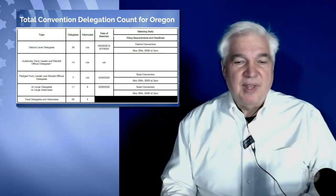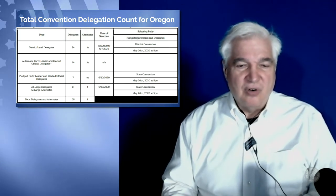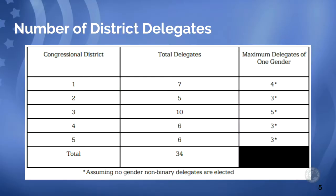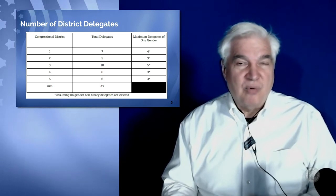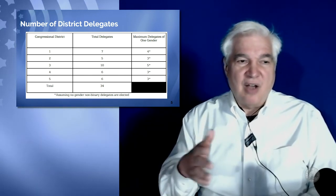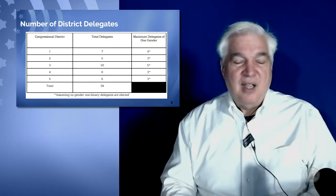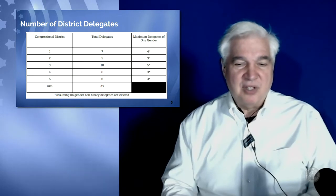The next slide shows the breakdown of delegates by Congressional District. Congressional District 1, the northwest corner of the state, will be electing seven delegates. The 2nd Congressional District, which is the two-thirds of the state on the east, will be electing five. The number is so low because the number of Democrats in the population is very low compared to Congressional District 3, which is basically Multnomah County and they get 10. Congressional District 4, the southwest corner of the state, gets six. And District 5, kind of in the middle on the west, also gets five.